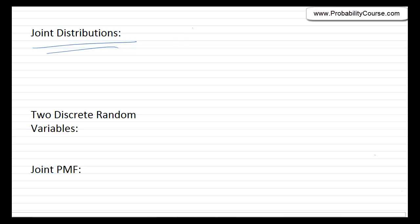So far, we have discussed situations in which I have a single random variable x. For example, if x is a discrete random variable, I normally consider its probability mass function. Or if x is a continuous random variable, I usually talk about its probability density function.